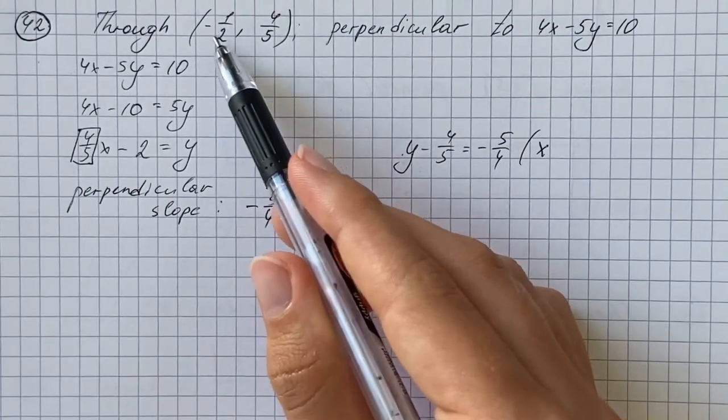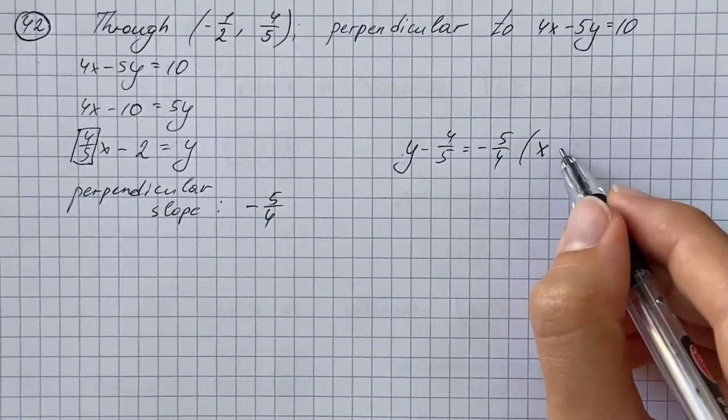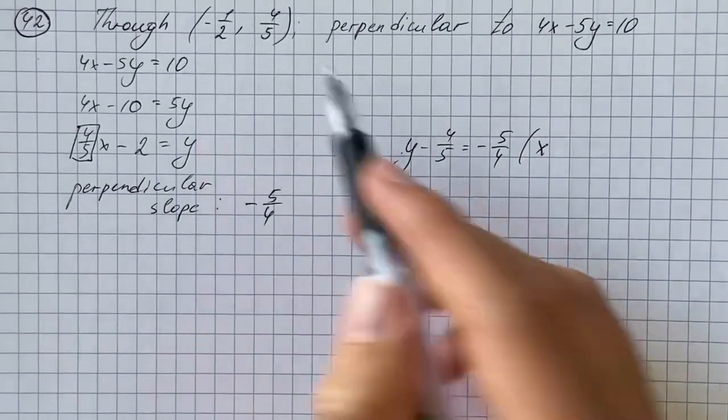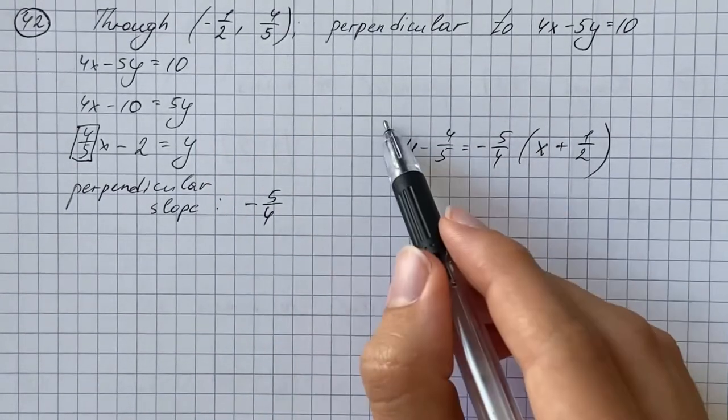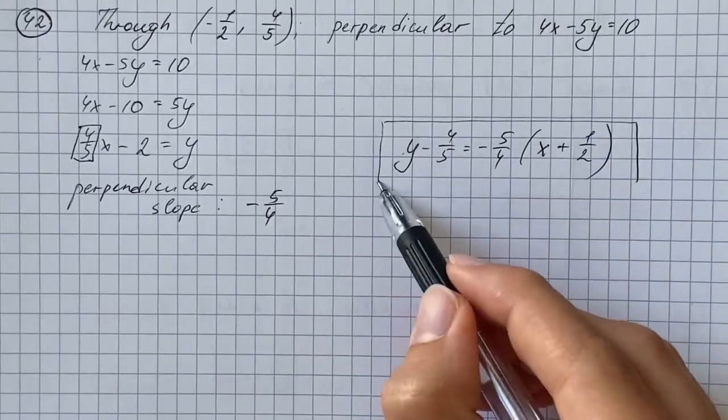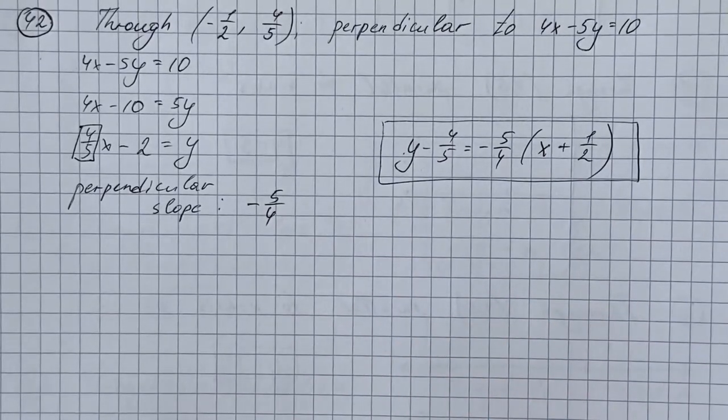the x coordinate which is negative one half, so that's going to be plus one half, and that's our answer.